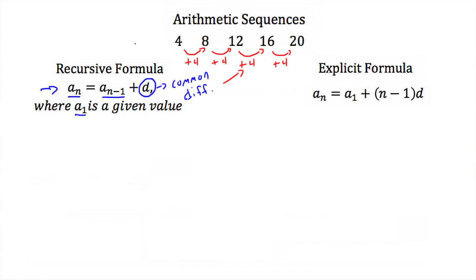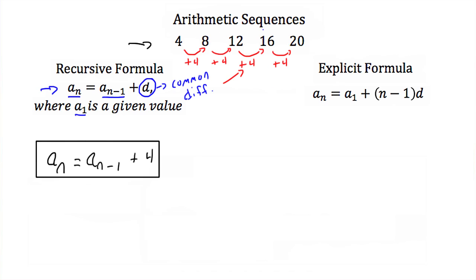The recursive formula for this arithmetic sequence then would be a_n is equal to a_(n-1) plus 4. Now an arithmetic sequence can also be written as an explicit formula. An explicit formula, instead of using previous terms, instead uses the position of each term. So any term a_n would be equal to the first term in our sequence, plus the position of that term minus 1, times d, where d is our common difference.